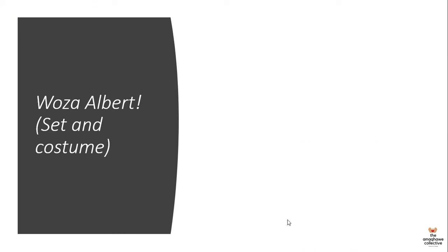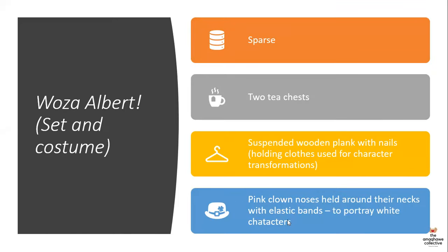The set design is very sparse — there's not a lot happening on stage. It follows poor theater conventions where the relationship between performers is intensified. On the set you have only two tea chests, a wooden plank suspended from the air with nails at the back holding the clothes the two characters use for their character transformations. There is also the use of pink clown noses worn around the performers' necks, which are used to portray the white characters in the play.